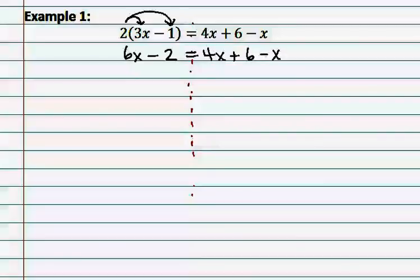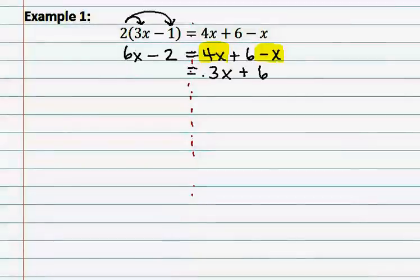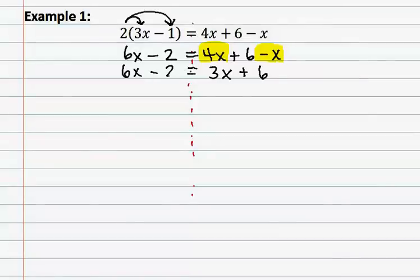We have now done the multiplication step. At this point, we now need to see if we can combine any like terms. On the first side, neither of these terms are like terms and therefore they cannot be combined. On the right side, we have a 4x and a negative x. These are like terms which can be combined to make a 3x. The 6 does not combine and therefore is written down. The other side is 6x minus 2.